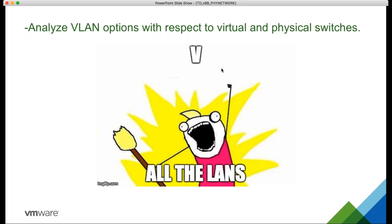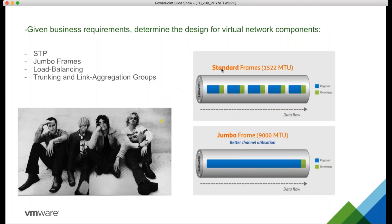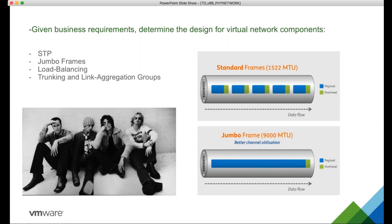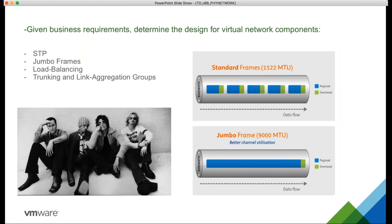Given business requirements, determine the design for virtual network components — things like STP or spanning tree, jumbo frames, load balancing, trunking, and link aggregation. Let's start off with spanning tree.